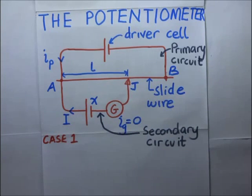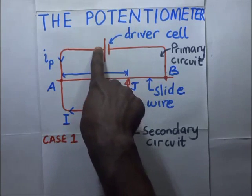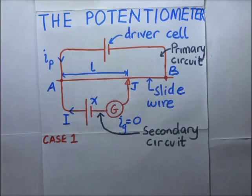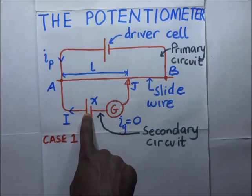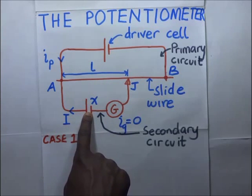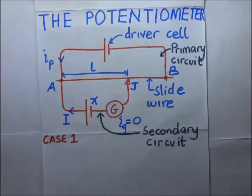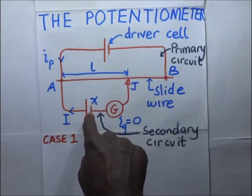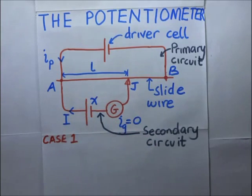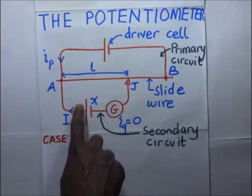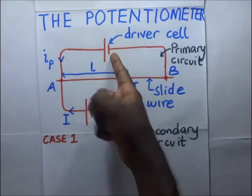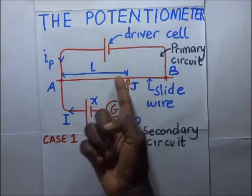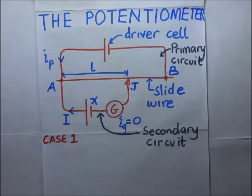The known potential difference — in this case the EMF of the driver cell — must be greater than the value of the unknown potential difference to be measured. Cell X has an unknown EMF; it could be a cell or a resistor. The potential difference of the driver cell should be higher than the potential difference of whatever is in the secondary circuit, because if the secondary circuit's PD is higher than the driver cell's PD, we won't be able to obtain a balance point.